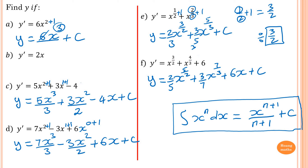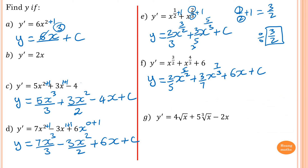Do you think you can do this question? First, you have to convert the surd form into index form, then do the integration. Square root of x is x to the power of a half. Cube root of x is x to the power of 1 third, so the term becomes 5x to the power 1 third. Then minus 2x. Now to integrate this: